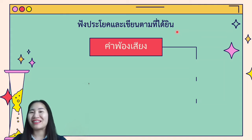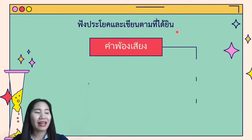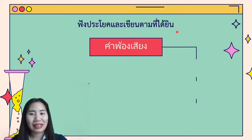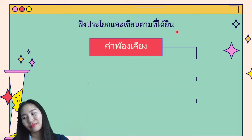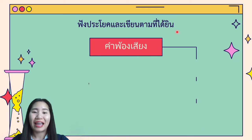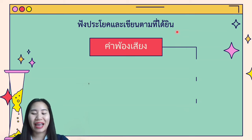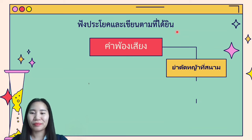I will give you 15 seconds. The sentence is ยาตัดหญ้าที่สนาม. Did you get the correct answer? The first ยา is 'grandmother,' and the second ยา means 'grass' — so: 'Grandmother cut the grass on the field.'